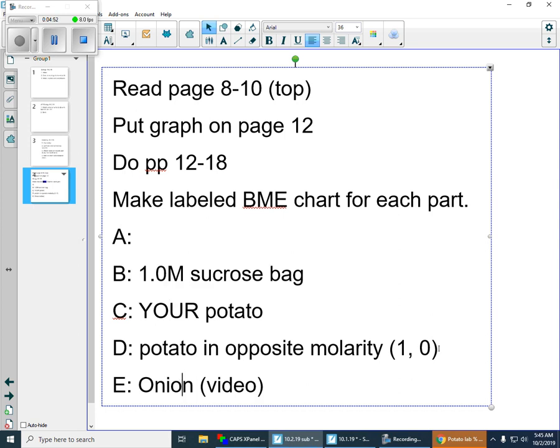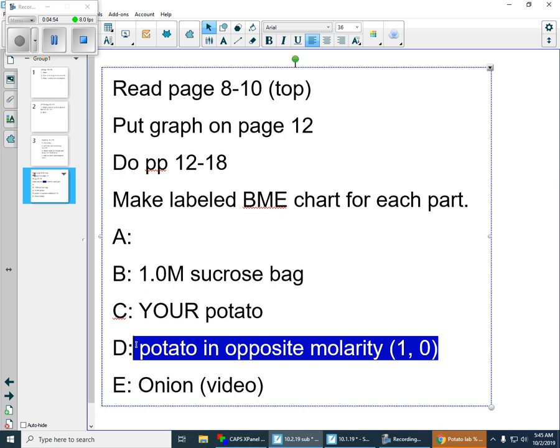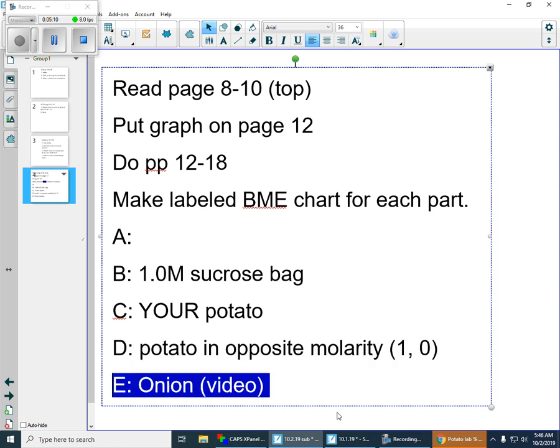So what D means is you would do a BME chart for the potato in the opposite molarity of yours. So, for example, if your potato gained mass, the second BME chart would be your potato losing mass in a different molarity of water. And then, if you get this far, part E, the onion.